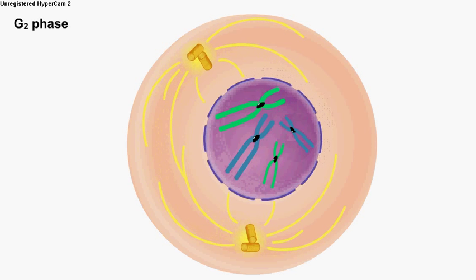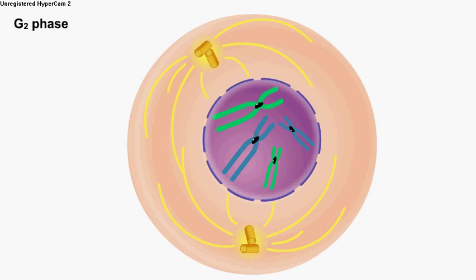At this point, the cell is in the first stage of mitosis, called prophase. As the chromosomes finish condensing, the nuclear membrane, or envelope, begins to disintegrate.